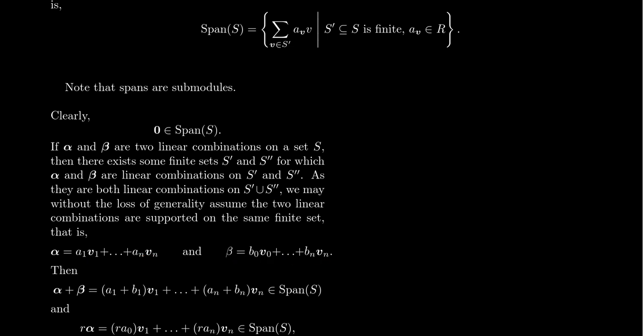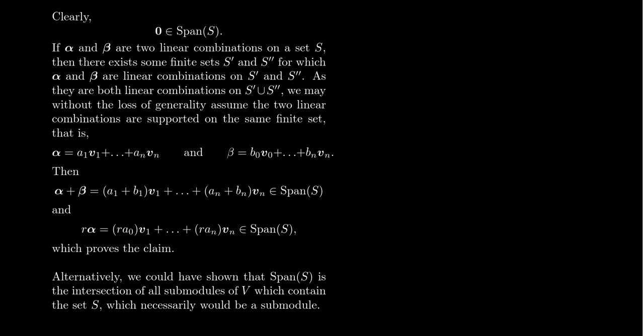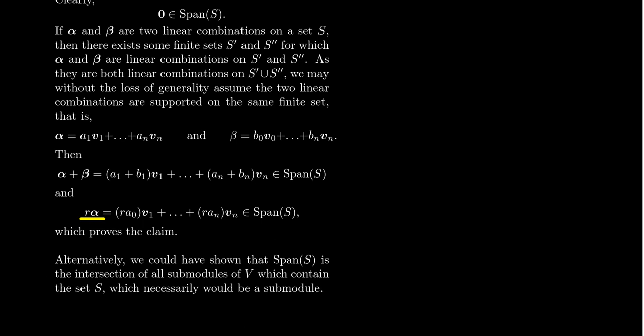When we write alpha and beta as linear combinations over the same finite set, adding them gives us a linear combination by adding like terms — the v₁ terms, v₂ terms, and so on — confirming closure under addition. For scalar multiplication, r times alpha just multiplies each coefficient by r, yielding another linear combination in the span. So spans are submodules — and in the context of vector spaces, subspaces. Alternatively, the span equals the intersection of all submodules containing S, and intersections of submodules are submodules.